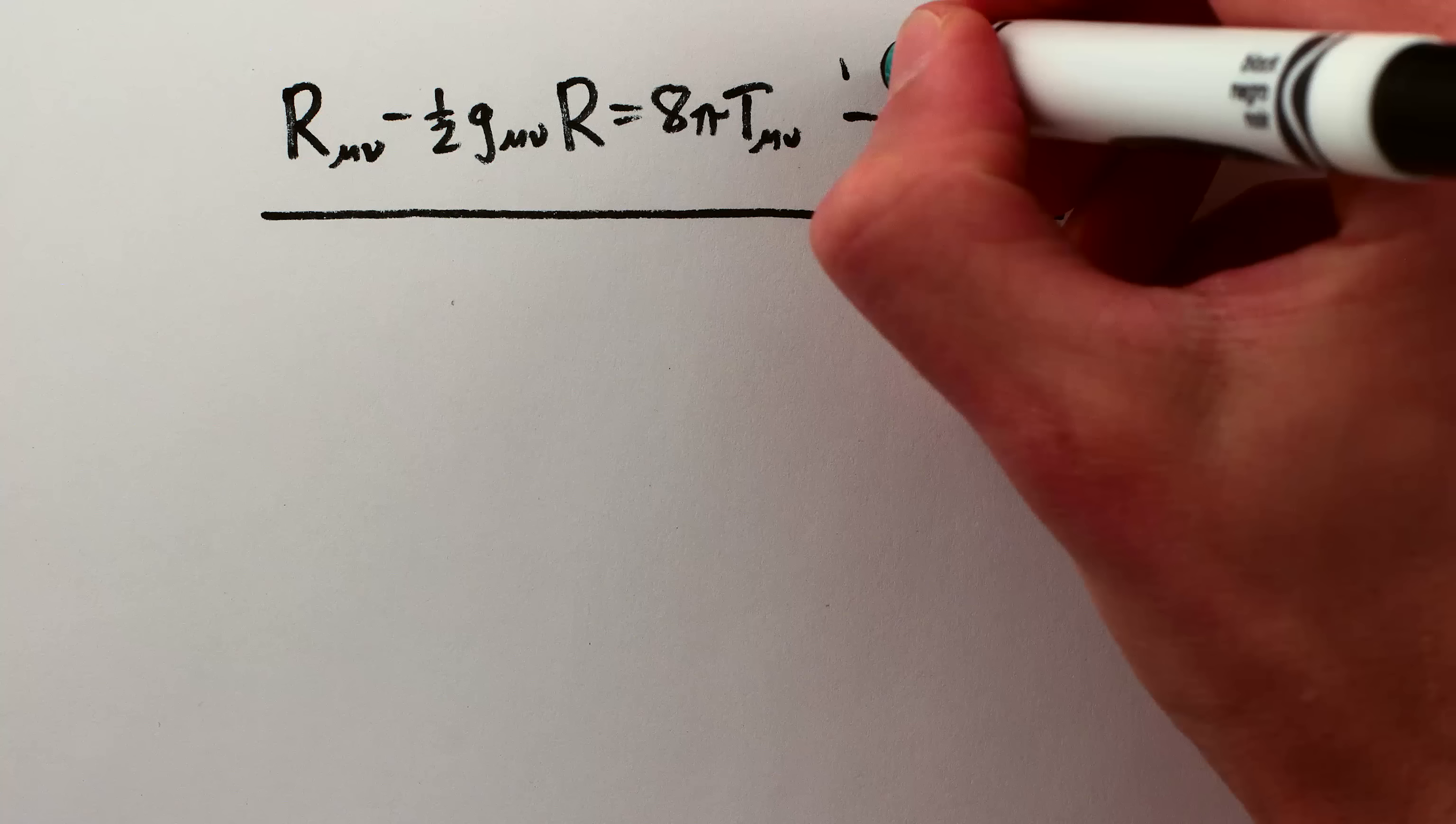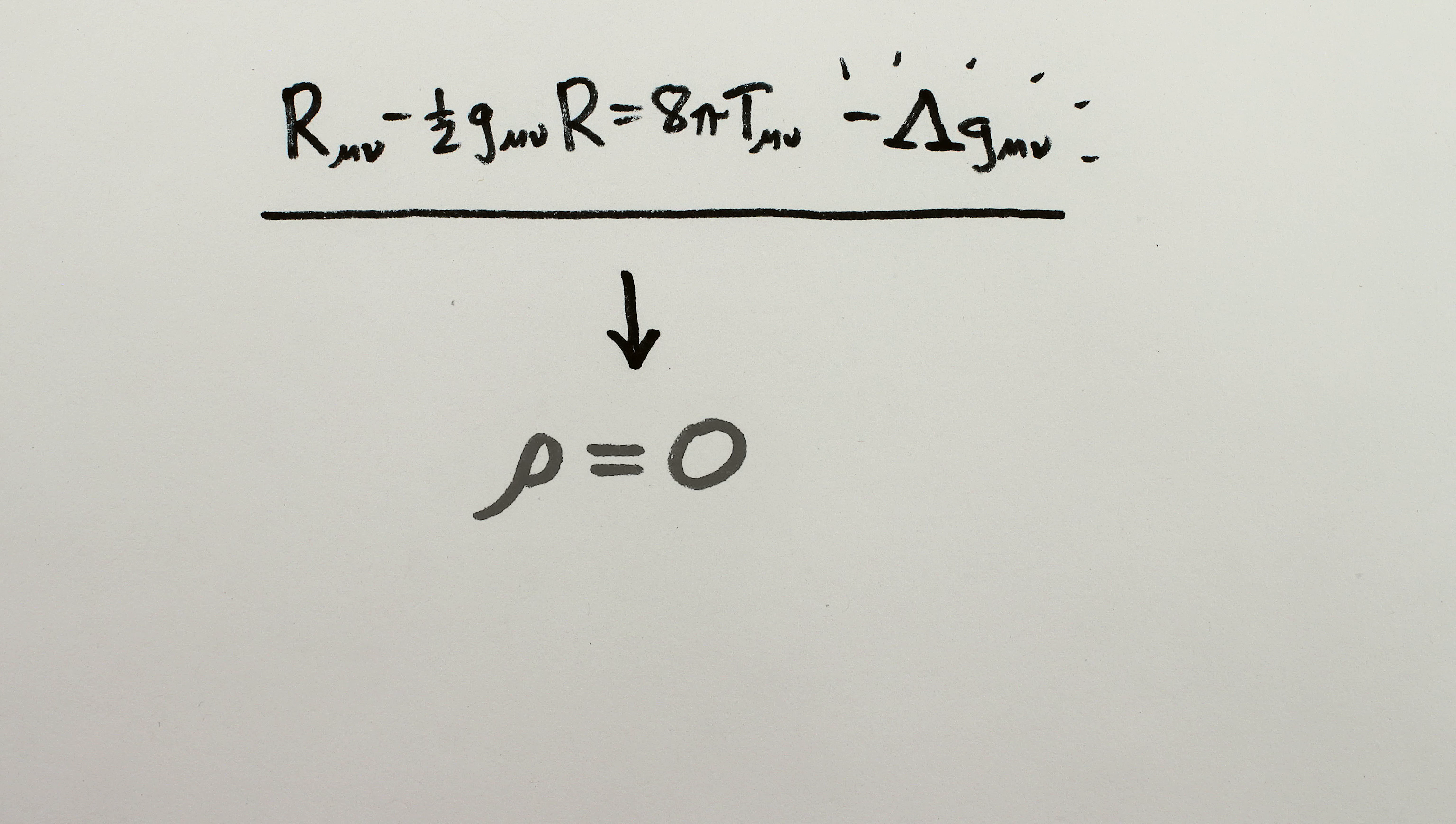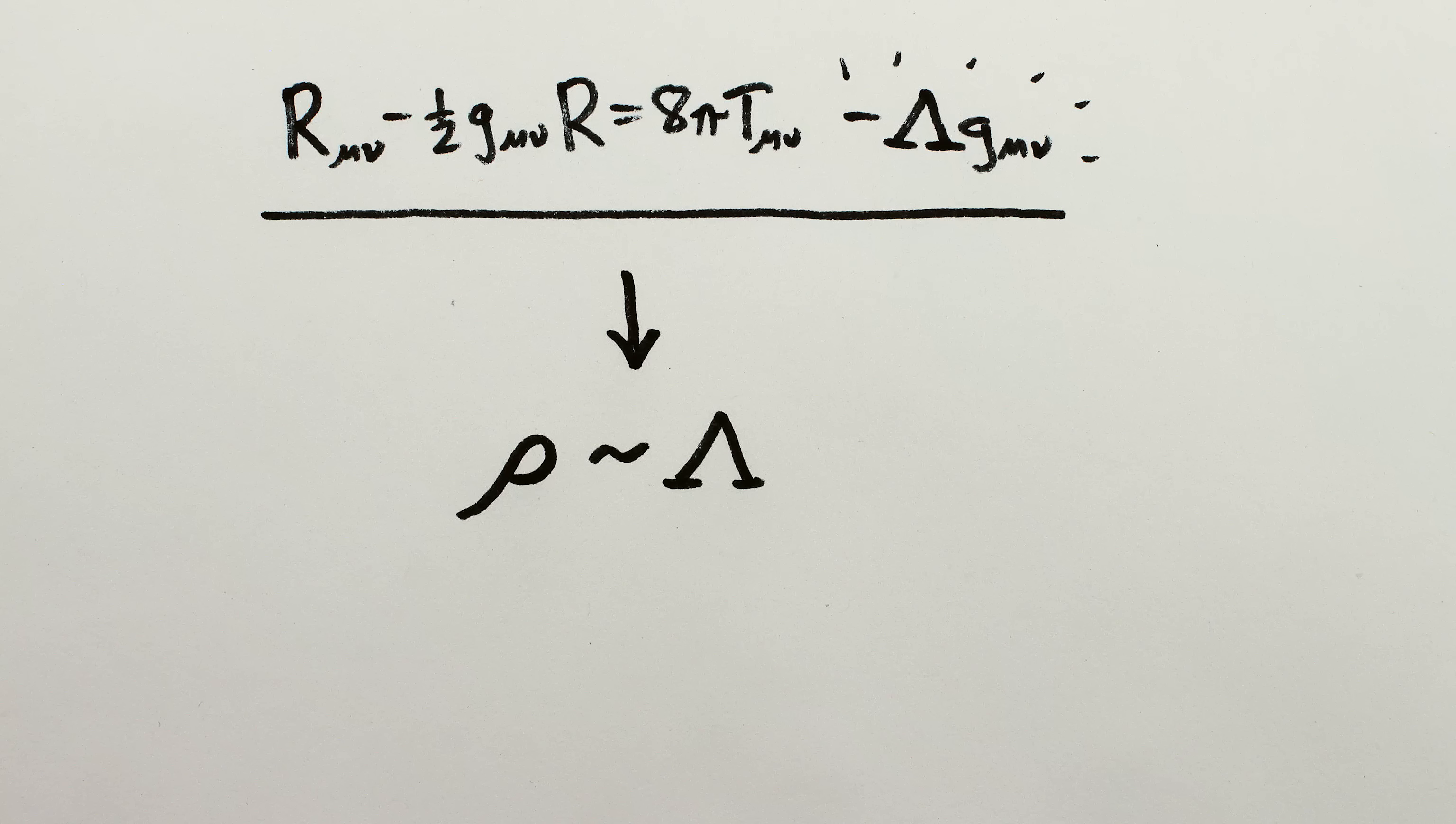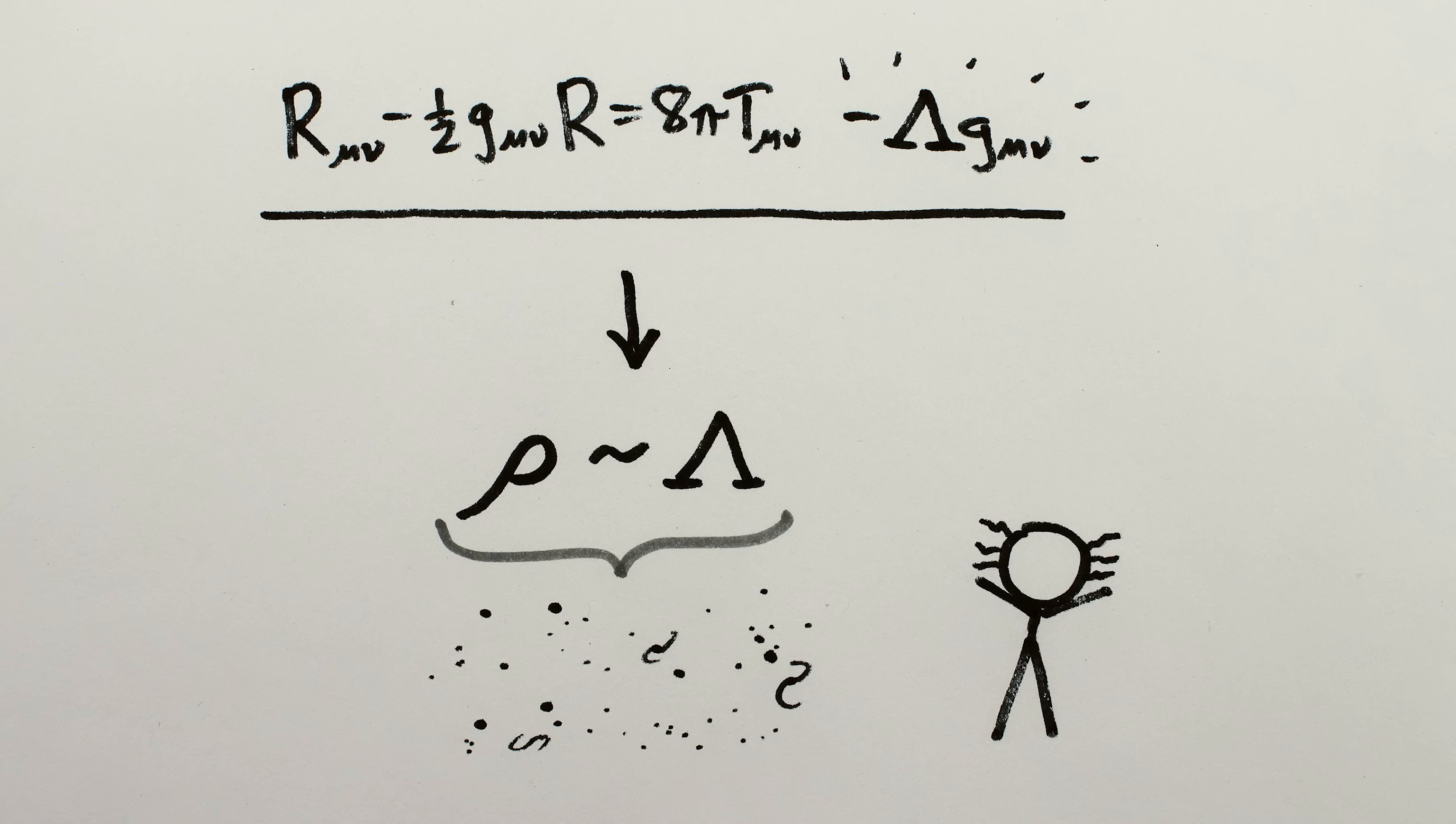And crucially for Einstein, the new term changes the equation for the density of the universe. Instead of saying density equals zero, it now says density is proportional to the new term. So if the new term was non-zero, that meant the universe could have stuff in it. Voila, solution number one.